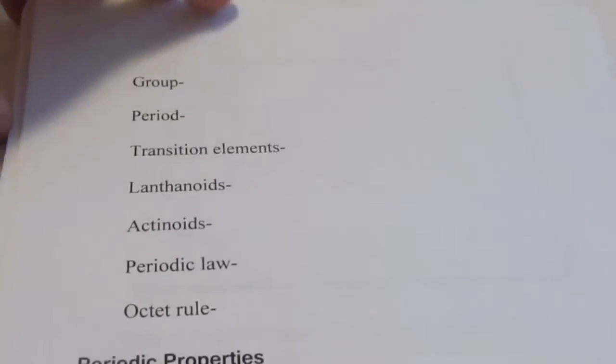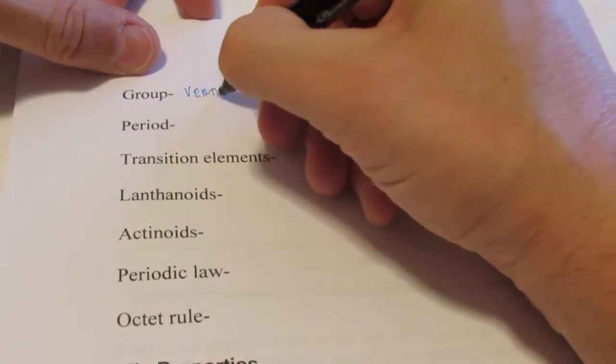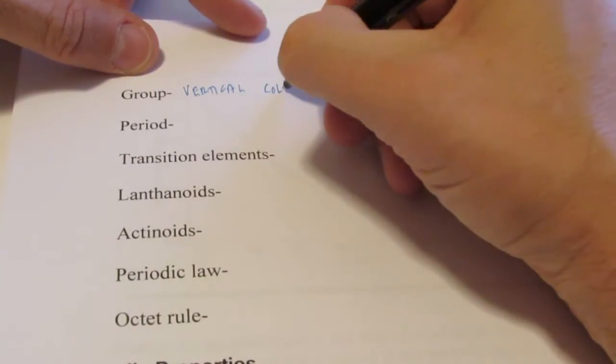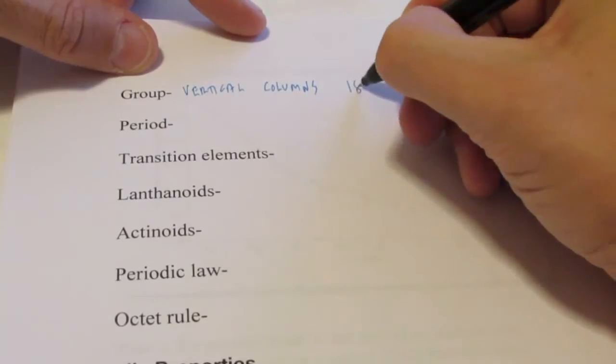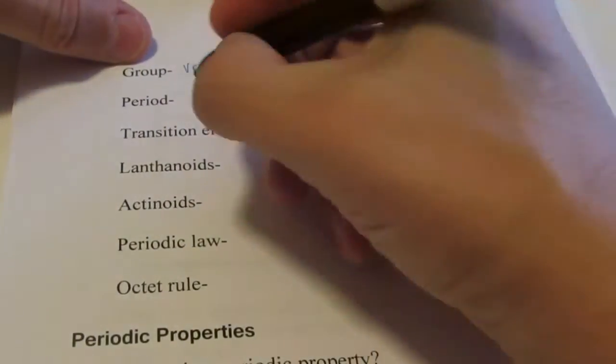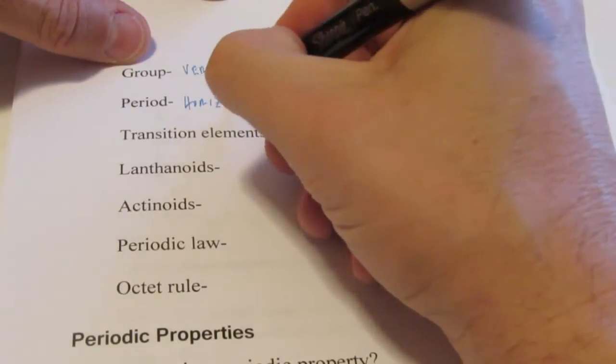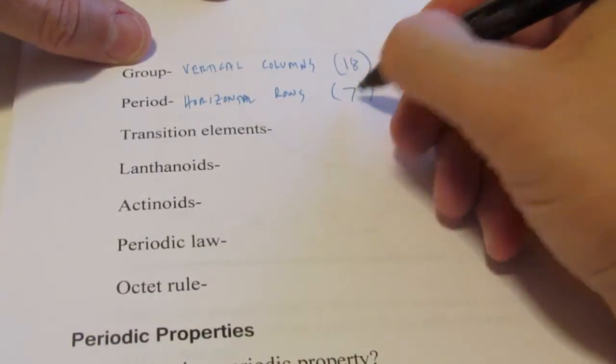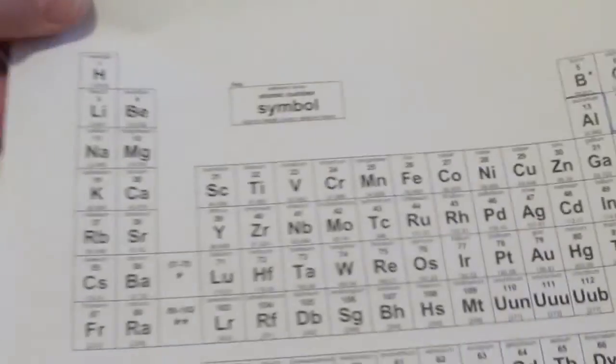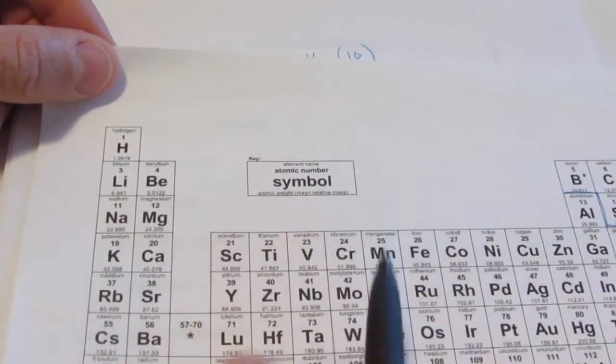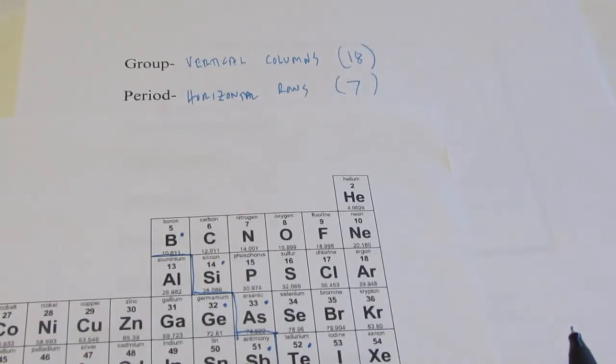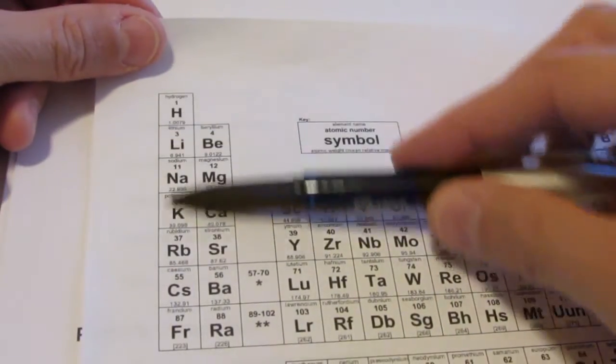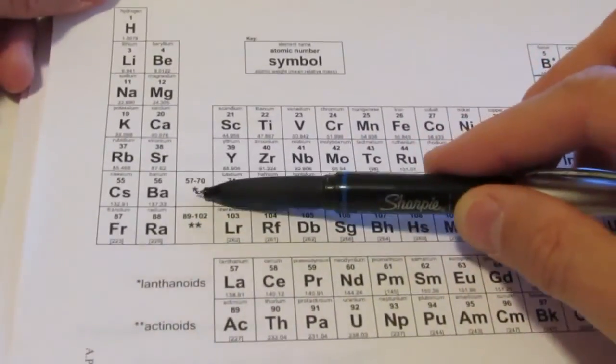Alright, next up. Groups. We said that groups are the vertical columns on the periodic table. Do you remember how many there were? If you said 18 of them, you are correct. Periods are the horizontal rows on the periodic table. Do you remember how many of those there were? If you said 7, you are correct. So the groups 1, 2, 3, 4, all the way across to the noble gas group, which is group 18. And the periods, there are 7 of them. Remember, these two on the bottom belong in these two boxes.